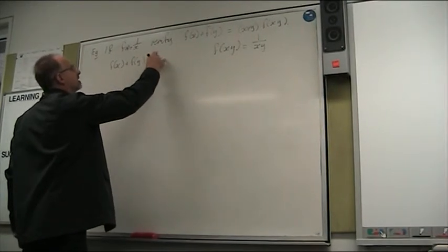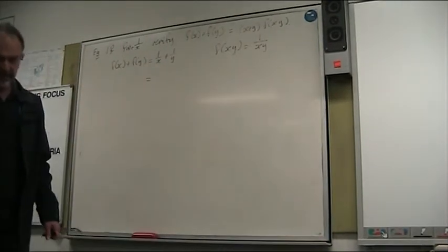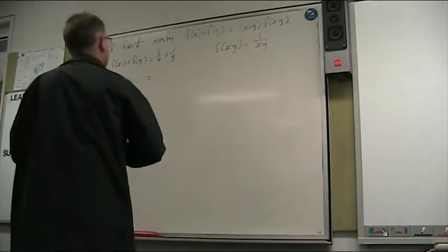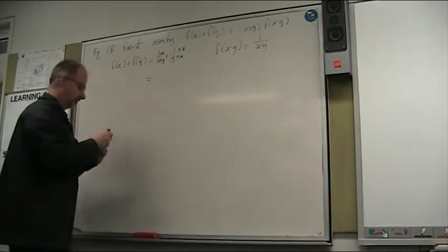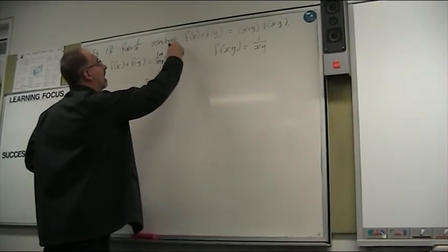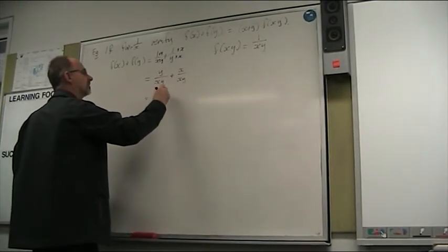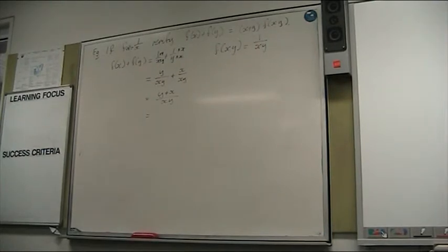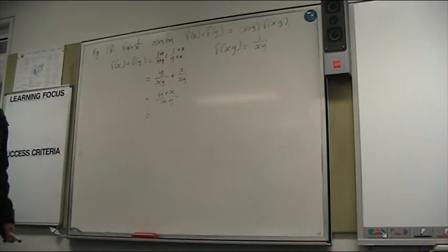Over here, of course, we've got 1 over x plus 1 over y, and to add those together we need a common denominator. So I'll multiply top and bottom of this one here by y, and this one here by x. So I'll get y over xy plus x over xy. Equals y plus x over xy.